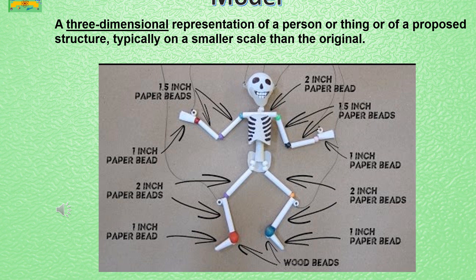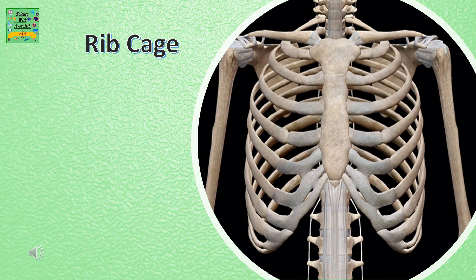Model. A model is a three-dimensional representation of a person or thing, or of a proposed structure, typically on a smaller scale than the original. Here is the structure of the rib cage.